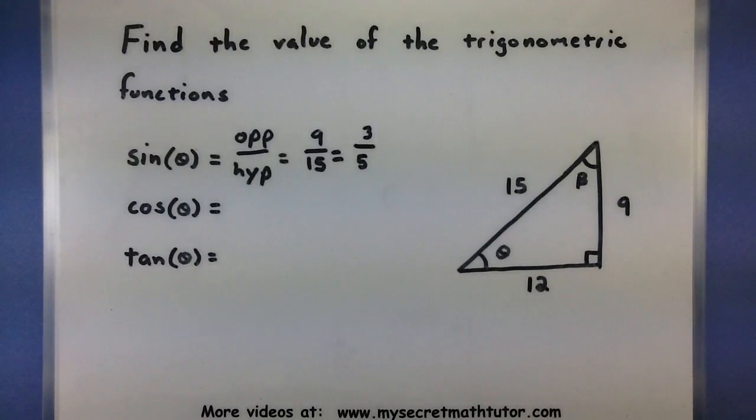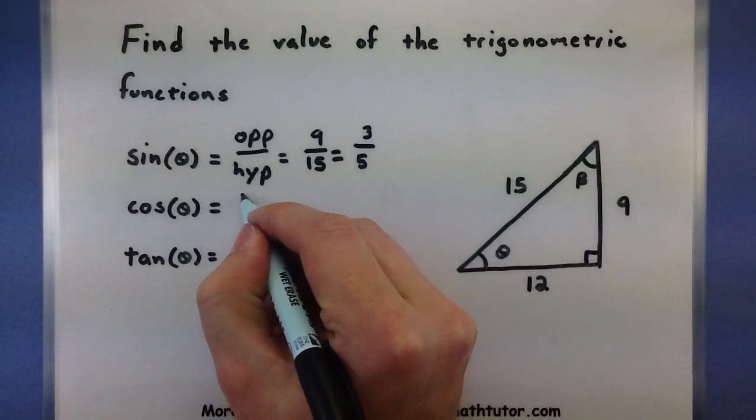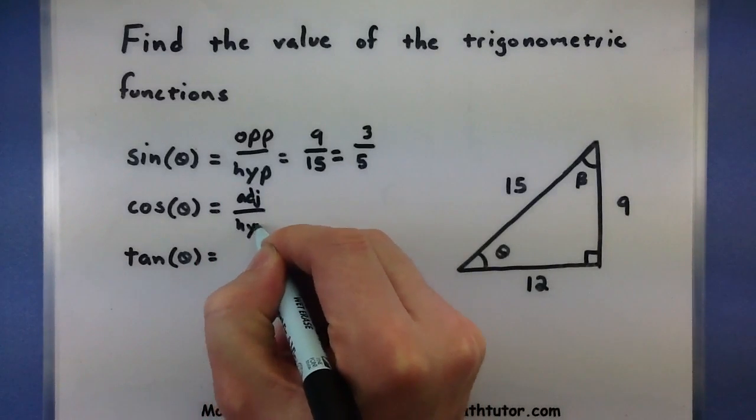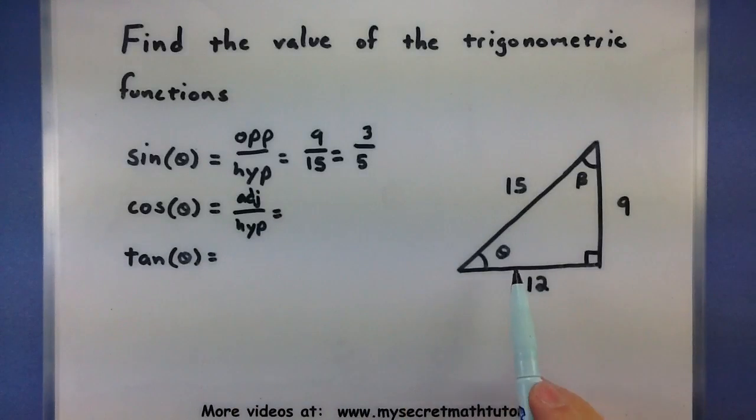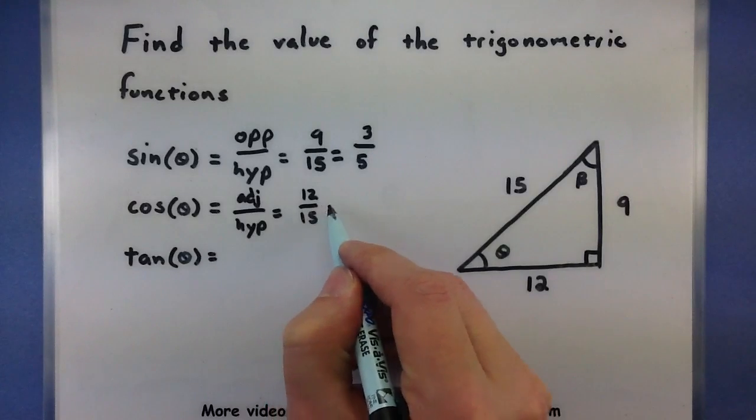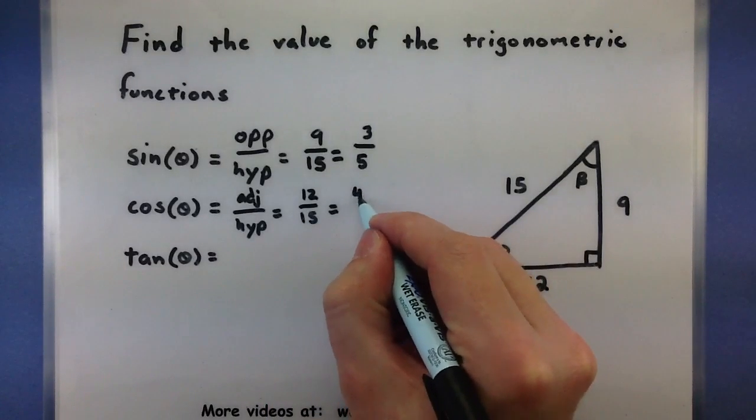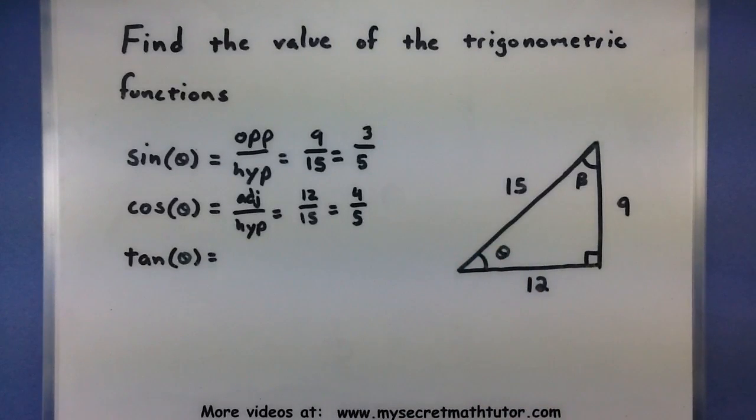Alright, not too bad, let's do another one. Here's cosine of theta. What two sides do I need to compare? Well, cosine is adjacent over hypotenuse. So adjacent, that's the side right next to my theta, 12, and my hypotenuse is still 15. It looks like this one can be reduced as well, 4 fifths. Alright, let's do one more.